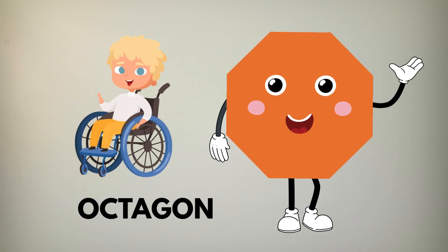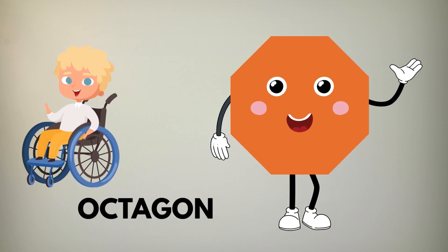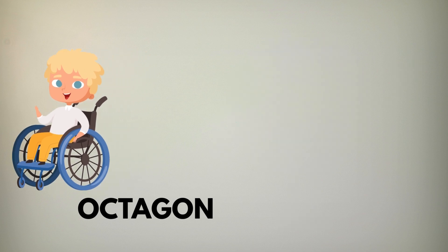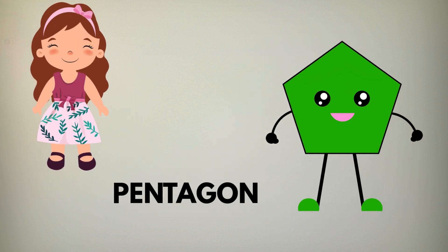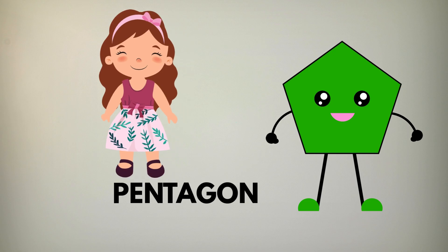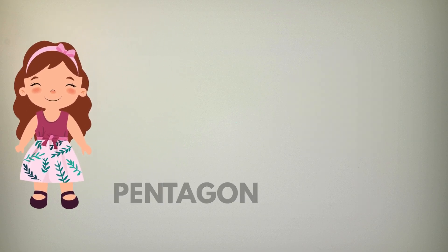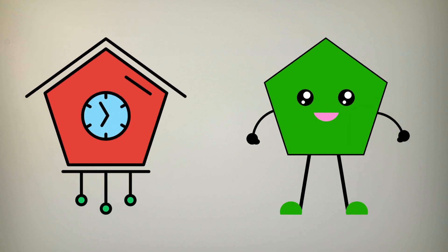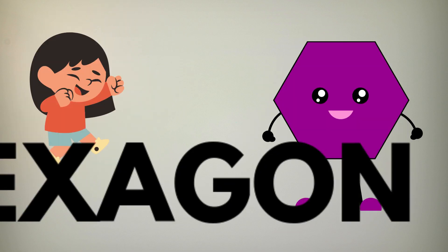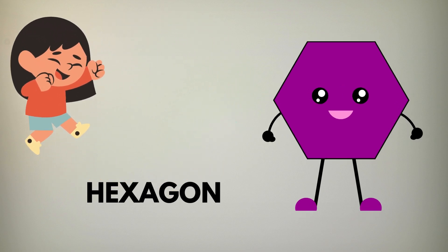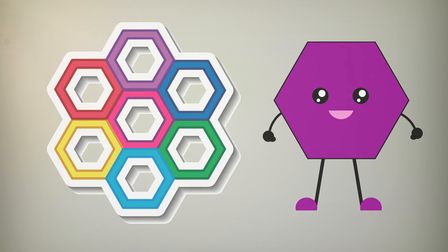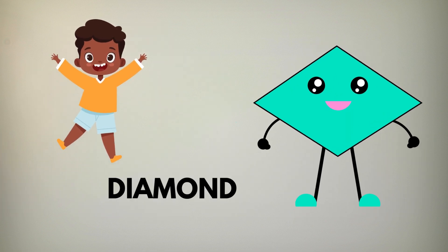An octagon with eight strong sides, like a stop sign where safety hides. A pentagon has five nice lines, like a house that always shines. The hexagon has six straight ways, like a honeybee's golden maze.